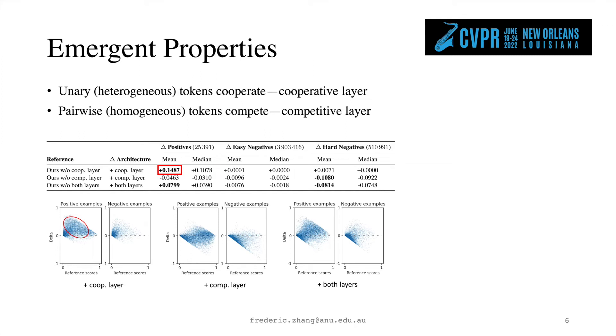In a complementary manner, we observe that the competitive layer reduces the scores of hard negatives significantly, by about 0.1. This is also shown in the scatter plot. In particular, I'd like to draw your attention to the dense mass around the line y equals minus x, which shows that the scores of many negatives have been reduced to 0.